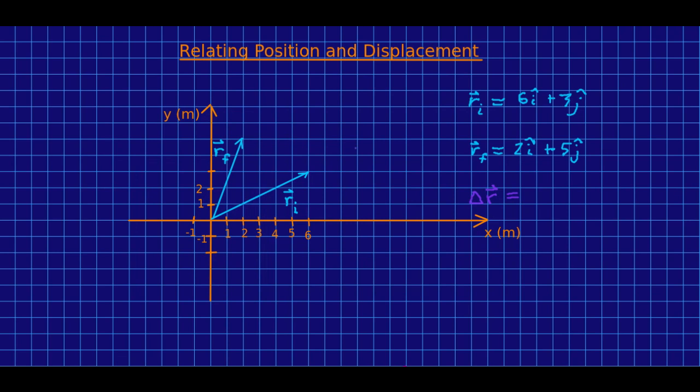What we'd like to do is see why I insist on calling it delta r which seems to indicate that it's a change. Well you can see that it is the change in position because it points from where the thing started to where the thing ended. And so it's describing how the location of the object changed. But does that mean we can calculate it the way we know how to calculate any old change as a final minus an initial? Well let's have a look.